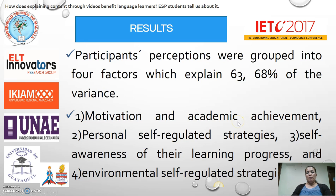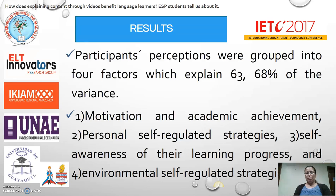The other factors dealt with the development of personal self-regulation strategies, self-awareness of their learning products, and environmental self-regulated strategies. In the last factor, participants searched for help from more knowledgeable peers in order to complete the activities they were supposed to do.